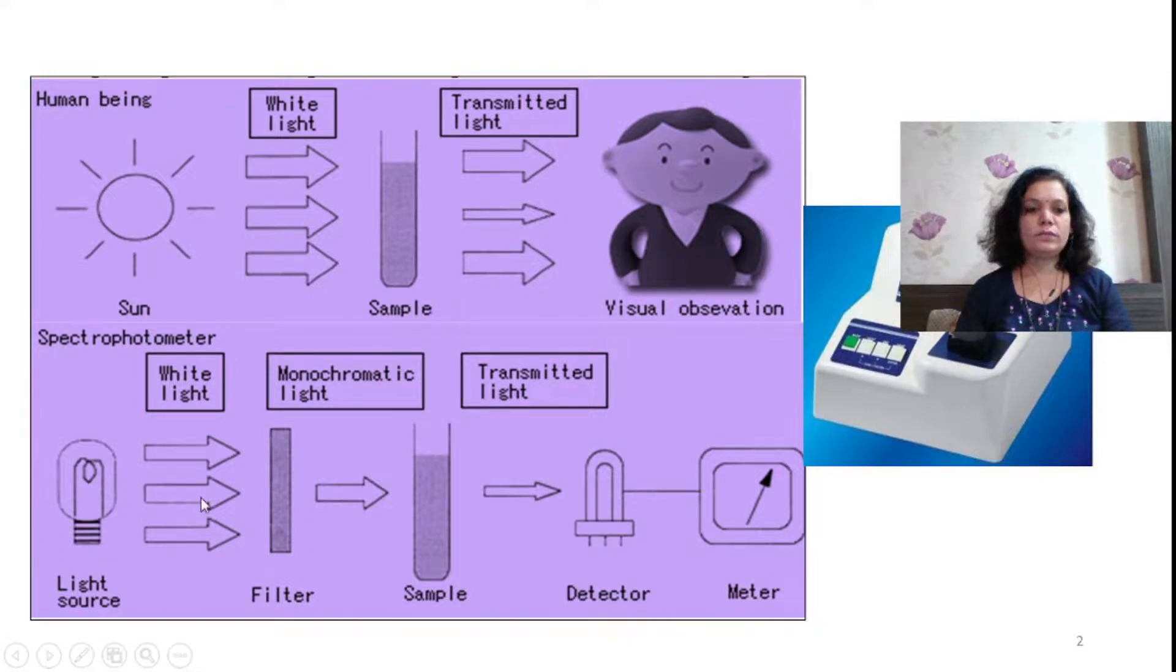The inbuilt structure of this instrument is as shown over here where you have a light source passed through the filter, then it is passed through the colored solution. The detector will detect the intensity of the transmitted light which will be obtained as a readout device over here as a digital display.